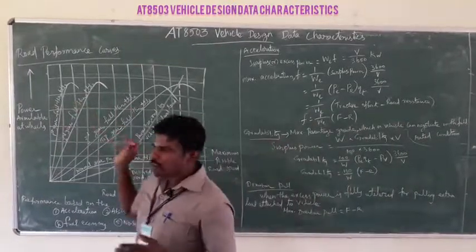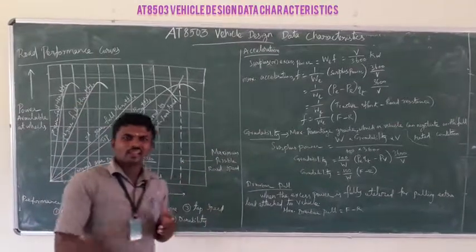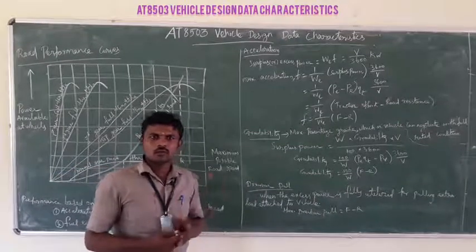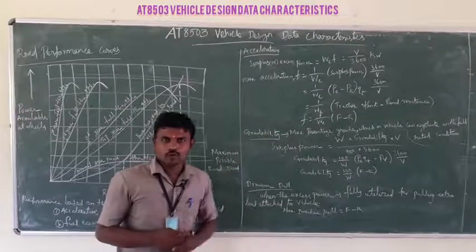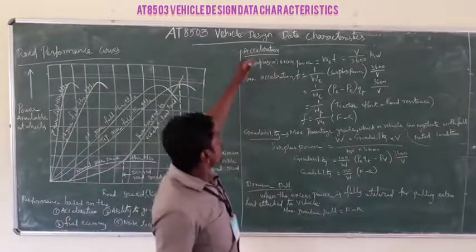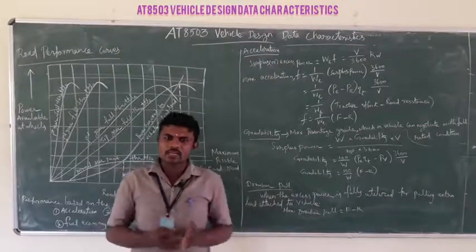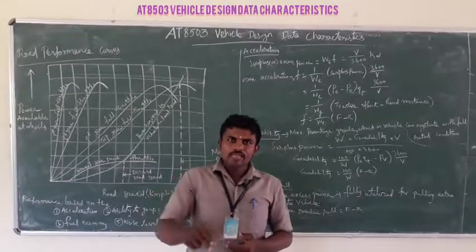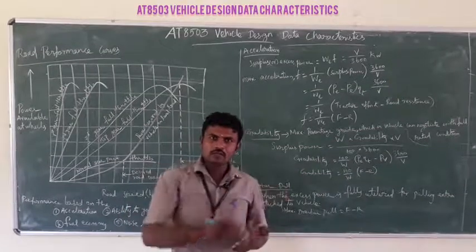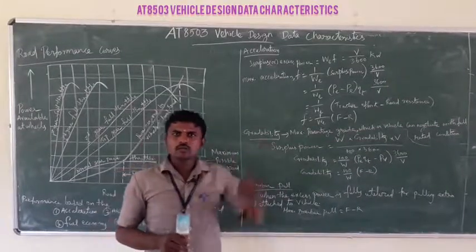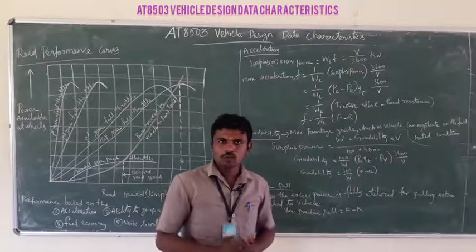This is the performance curve of the vehicle. Another type of vehicle curve is also available with respect to vehicle speed and tractive effort. Next, we are going to study acceleration. When you give acceleration, the vehicle moves in the forward direction — it gives movement to the vehicle.